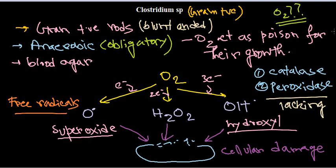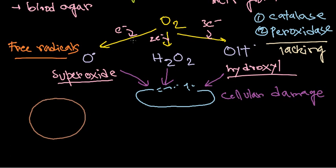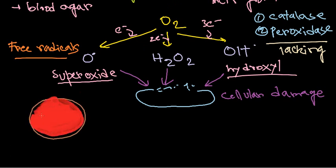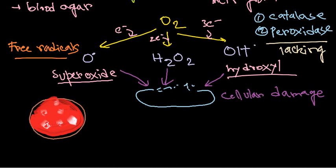On blood agar, the colonies appear as red-colored colonies surrounded by a white or whitish region. This is the typical appearance of Clostridium species colonies on blood agar.